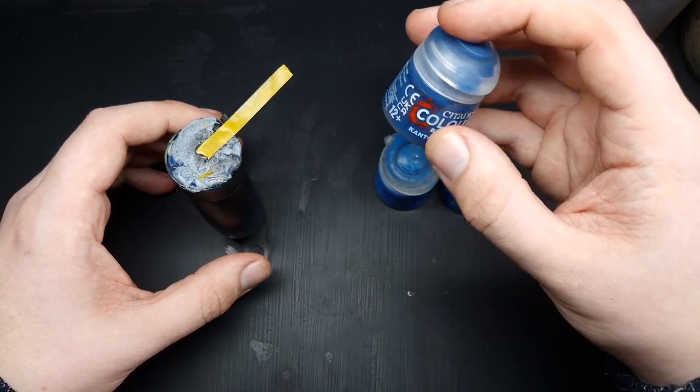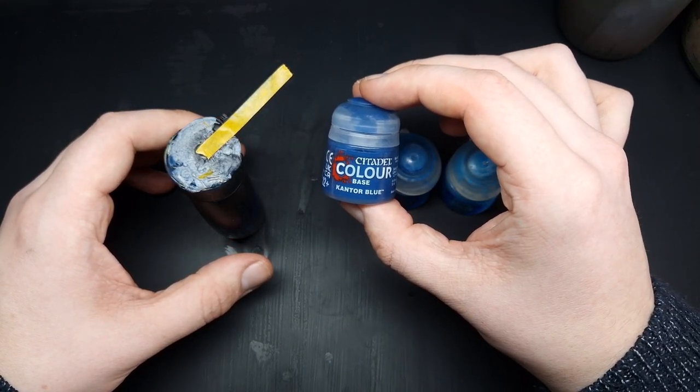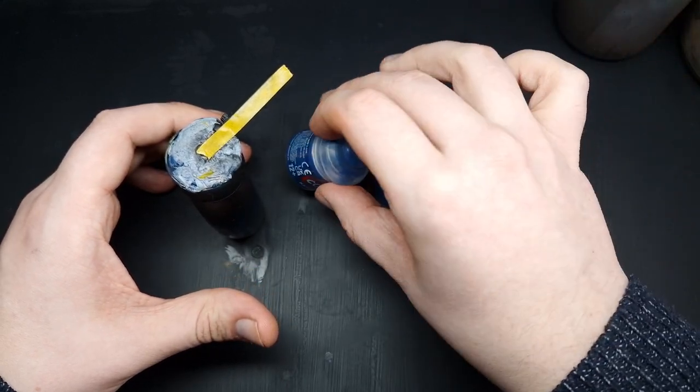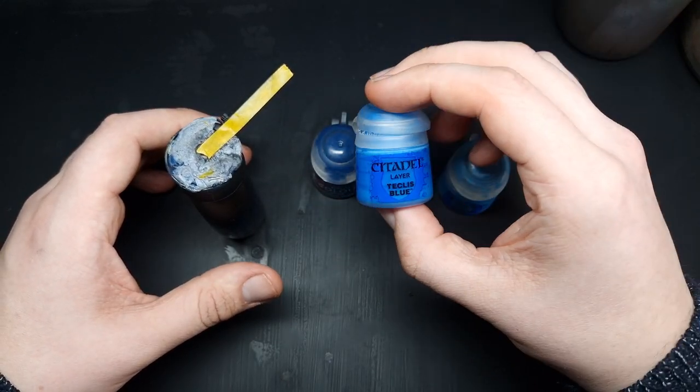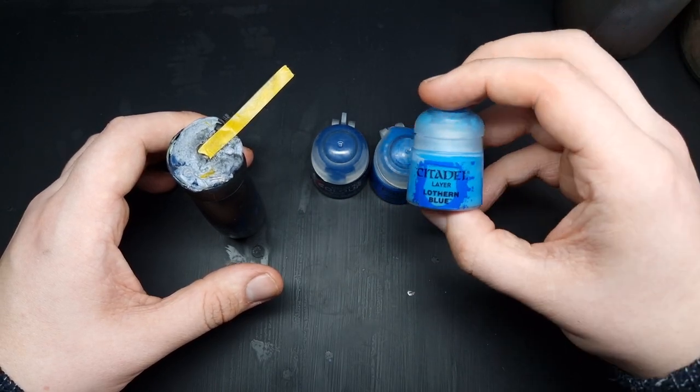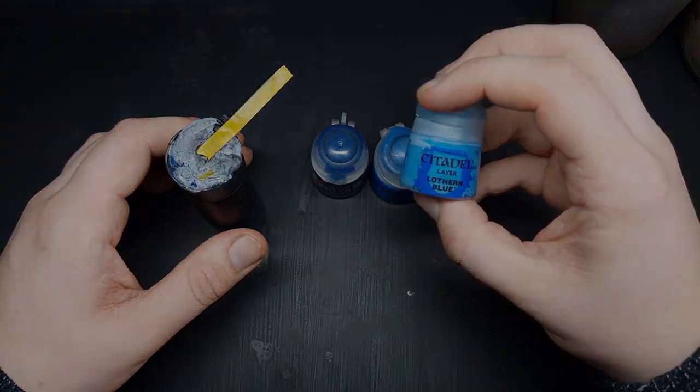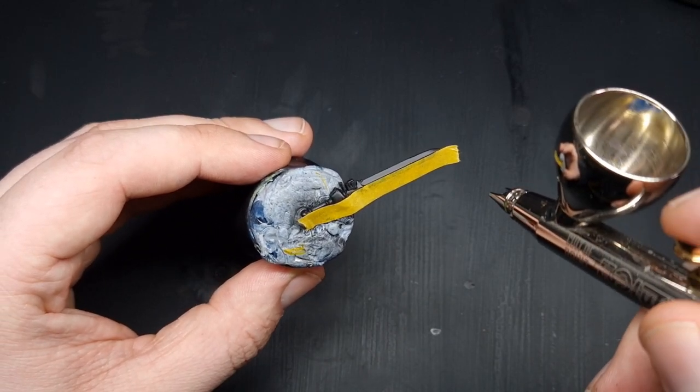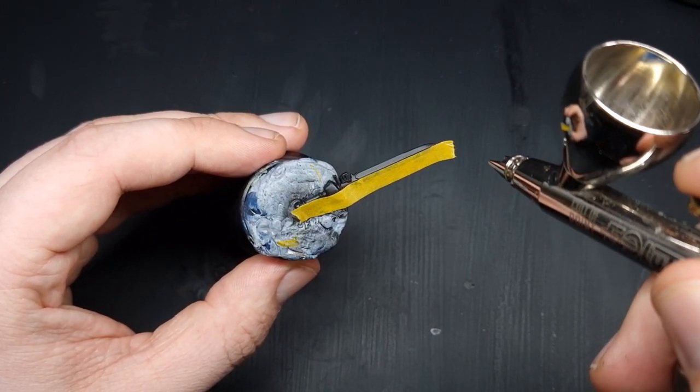So the colors that we're going to use is going to be a base coat of Kantor Blue, and then our first highlight is going to be with some Teclis Blue, and then our final brightest highlight is going to be with some Lothern Blue.